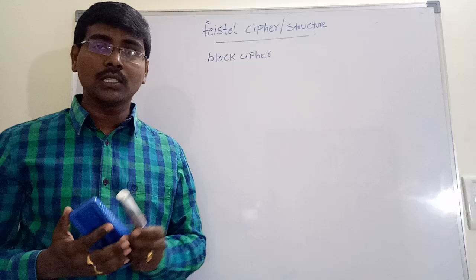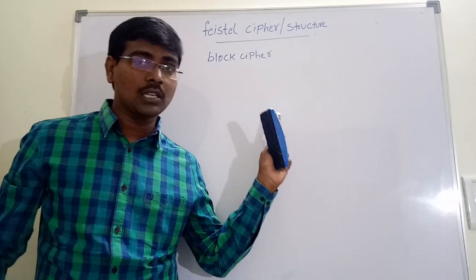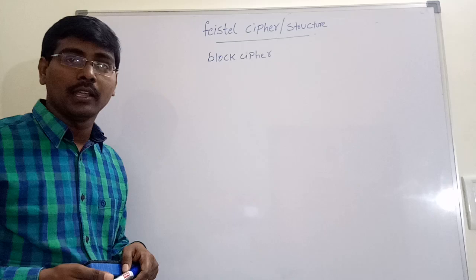This Feistel Cipher divides the plain text into two equal halves. Suppose if it is not possible to divide into two equal halves, add some padding bits to make them equal. So the general procedure is for Feistel Cipher...